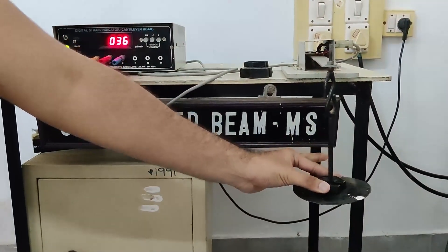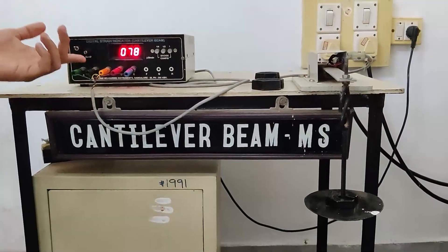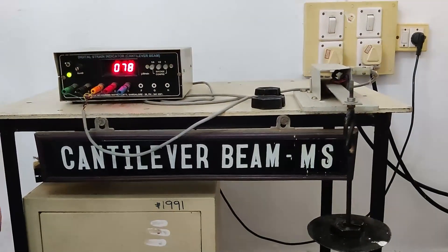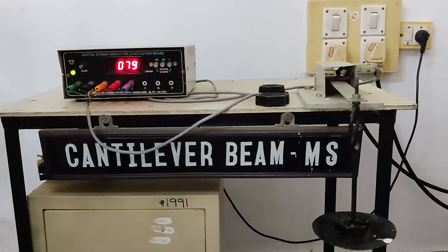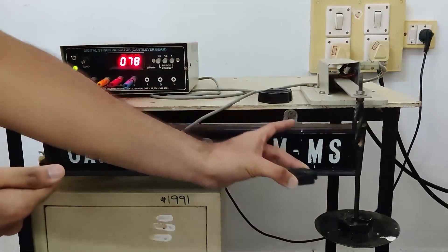As you can see a 100 gram plate causes a strain of 78 on the mild steel. Now like this we increase all the weights in the order of every 100 grams. So now let's add another 100 grams over here.